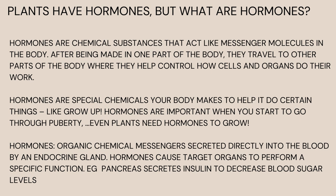Plant hormones bring about a response only in the region of the plant where they are produced. The three hormones we are going to look at in this lesson are auxins, gibberellins, and abscisic acid. Auxins and gibberellins promote growth, but at different regions of the plant. A plant has roots, a stem, leaves, and flowers, and in each part certain hormones are secreted, causing a certain reaction in that region.